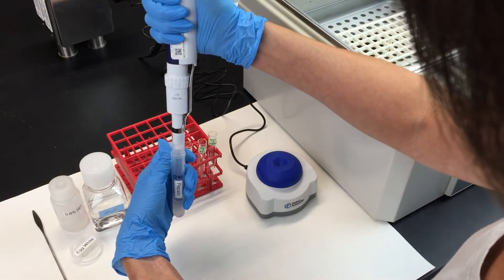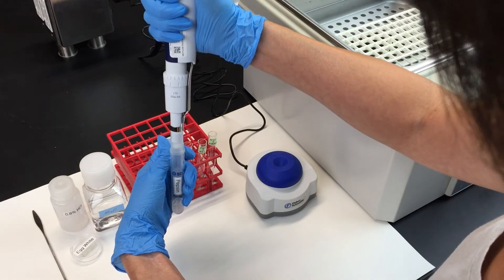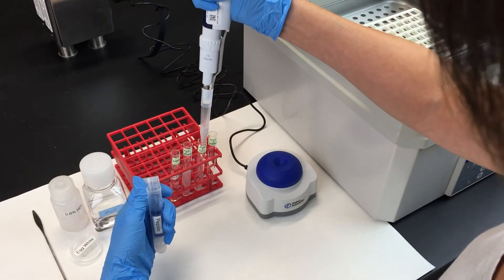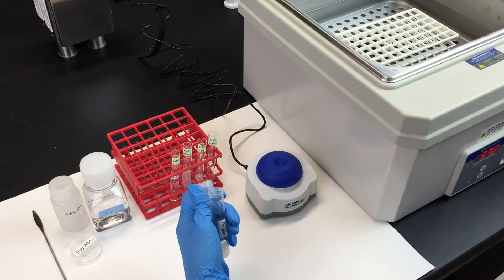The third test tube will have 2.5 milliliters of pepsin and 2.5 milliliters of a dilute hydrochloric acid solution.